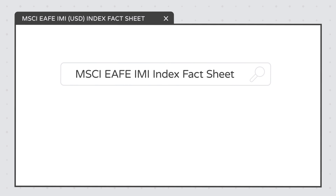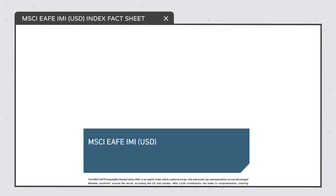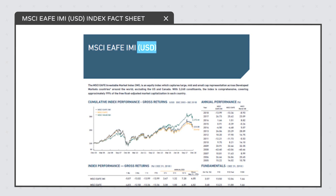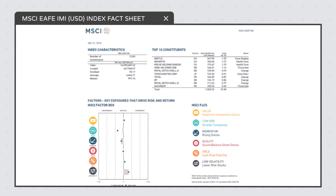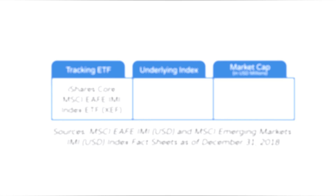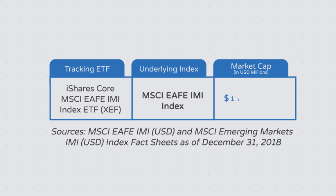First, Google 'MSCI EAFE IMI Index fact sheet' and download the most recent month-end PDF. Also, ensure that the document is the US dollar version. This is the underlying index for the iShares Core MSCI EAFE IMI Index ETF, XEF. At the top left corner of the second page, you'll find the market cap of the index in USD millions. As of December 31st, 2018, this amount was $14,590,688.